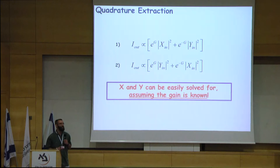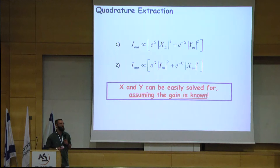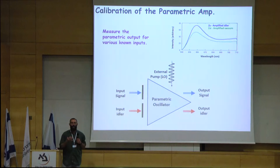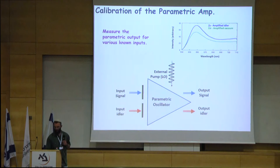So I need to calibrate the parametric amplifier. It turns out this is a simple process. All you need to do is measure the outputs of the amplifier for a given set of known inputs. For example, I can block the signal input measuring the output for idler input only, or block both signal and idler measuring the spontaneous output — the amplified vacuum input, which gives me the vacuum level — or measure the transmission of signal and idler through the parametric amplifier by blocking the pump.